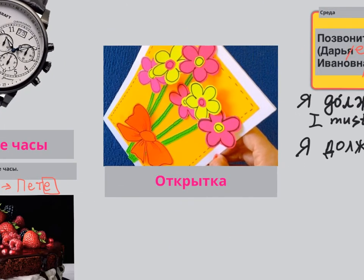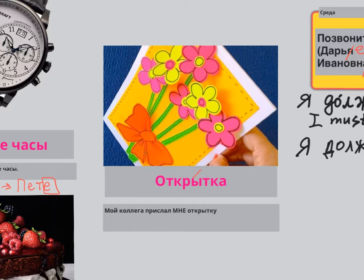We've got ОТКРЫТКА — a postcard or card. МОЙ КОЛЛЕГА ПРИСЛАЛ МНЕ ОТКРЫТКУ С ДНЁМ РОЖДЕНИЯ. That means: my colleague sent me a birthday card. С ДНЁМ РОЖДЕНИЯ — with a birthday, literally. МОЙ КОЛЛЕГА ПРИСЛАЛ МНЕ ОТКРЫТКУ С ДНЁМ РОЖДЕНИЯ. He sent me a birthday card.